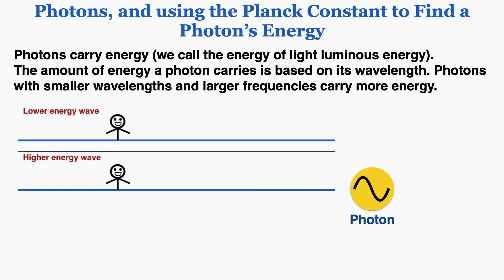Photons carry energy — we call the energy of light luminous energy. The amount of energy a photon carries is based on its wavelength. Photons with smaller wavelengths and larger frequencies carry more energy. Students sometimes forget whether it's a larger or smaller wavelength that carries more energy, so I'm going to use an analogy I also used in the EM wave video.